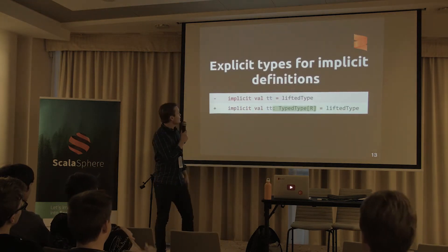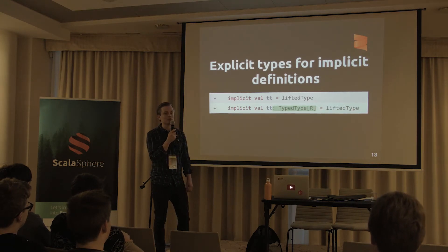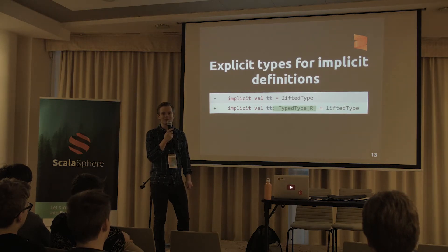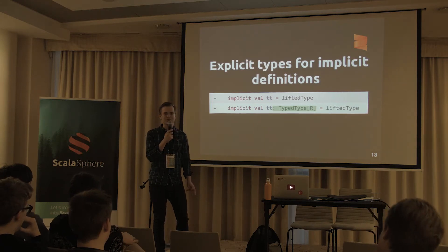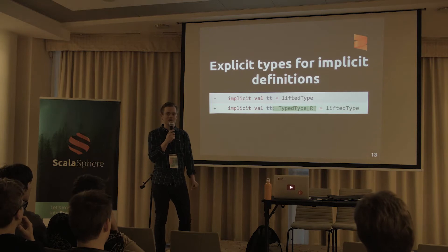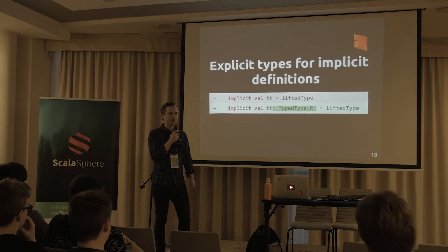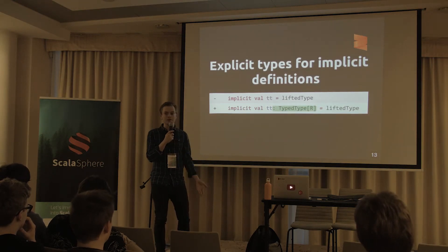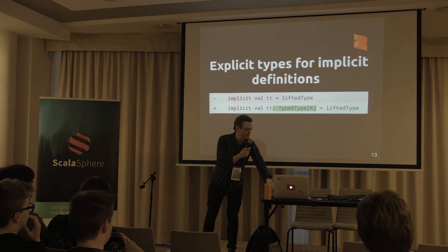Another thing in Dotty is that it requires explicit type annotations for public implicit definitions. This may be a problem if you've been using type inference, and some of them are quite complex. It'd be quite annoying to have to go into your code base and start typing everything manually, especially the hairy ones that IntelliJ won't figure out automatically. So it'd be nice if we had a tool that could use the types from the compiler and insert them, since the compiler already infers them.